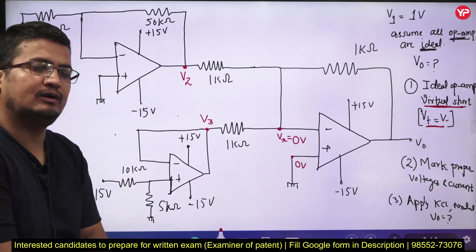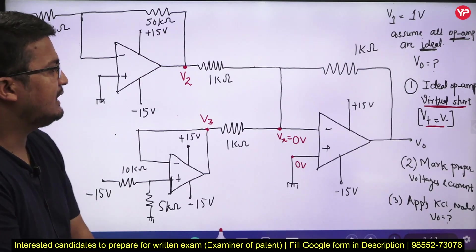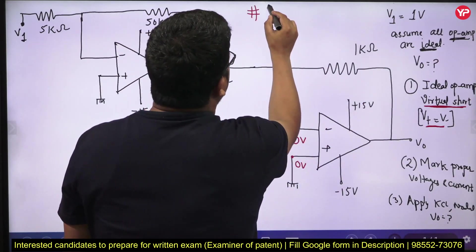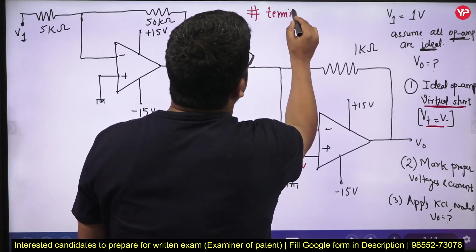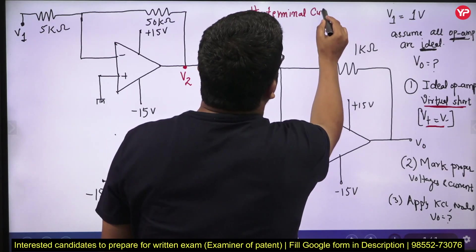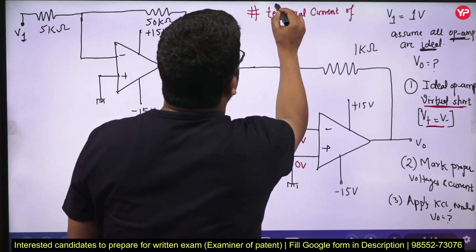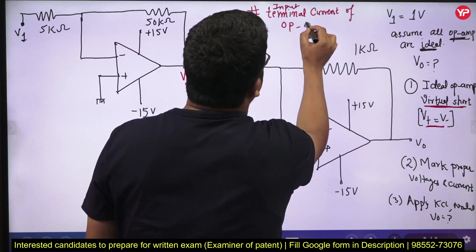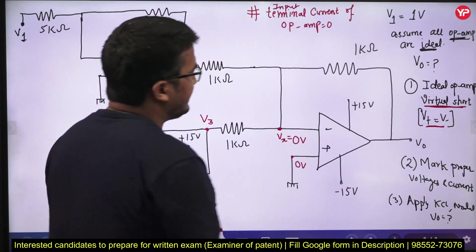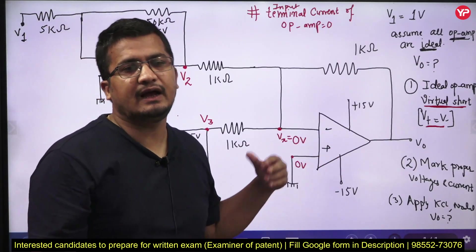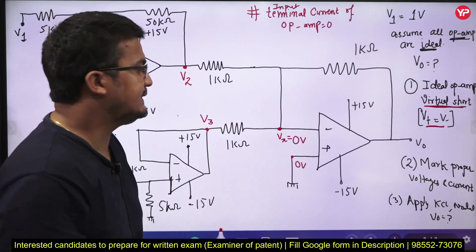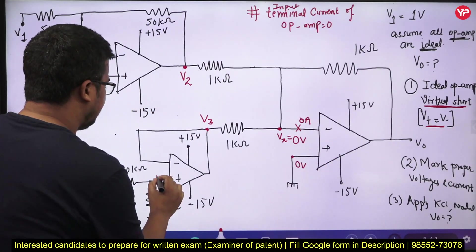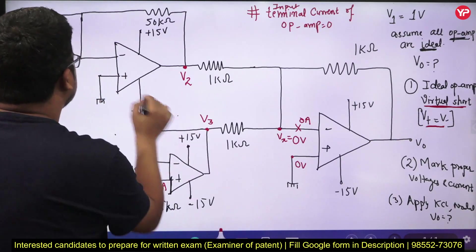Now, in an ideal operational amplifier there is one more property: the input terminal current of the op-amp is 0. This is because the operational amplifier has infinite input resistance and ideally zero output resistance. The conclusion is the current at the input terminals will be 0 amperes. So current here is 0, current here is also 0, and current here is also 0.